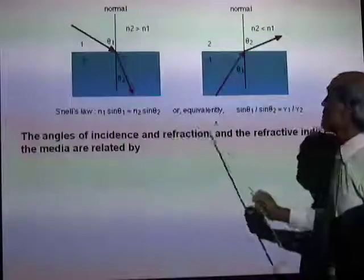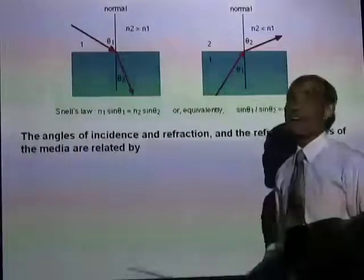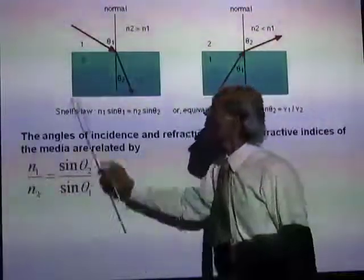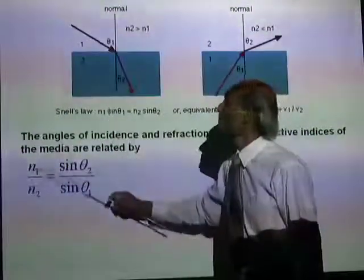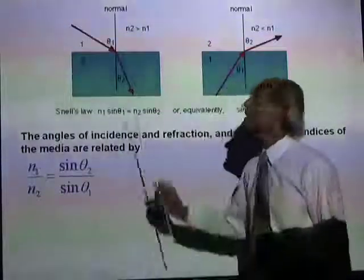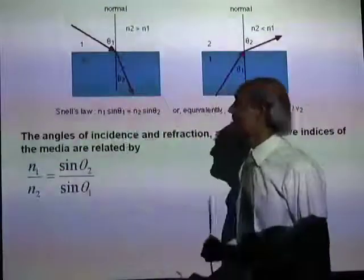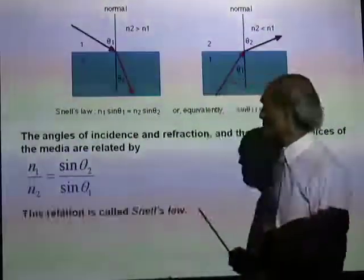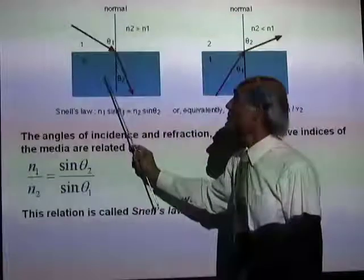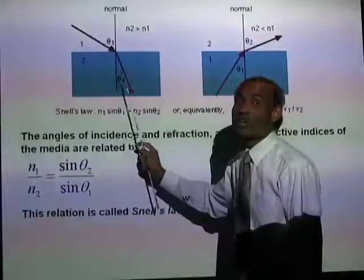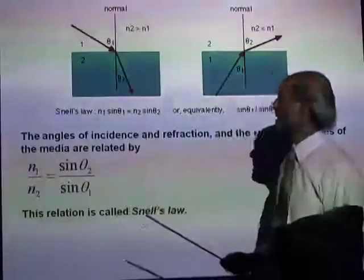The angles of incidence and refraction and the refractive indices of the media are related by Snell's law: N1 divided by N2 equals sin theta 2 divided by sin theta 1. That is, the refractive index of the first medium divided by the refractive index of the second medium equals the sine of the angle of refraction divided by the sine of the angle of incidence.